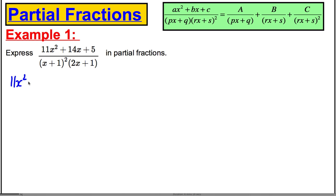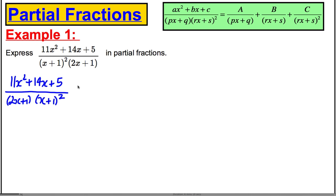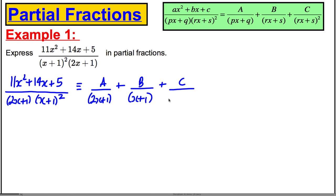Therefore, we can say that 11x² + 14x + 5, all divided by — I prefer writing it with the standalone linear factor first, it just makes it easier. So this is equal to some number A over the first factor, plus some number B over x plus one, and some number C over x plus one squared.